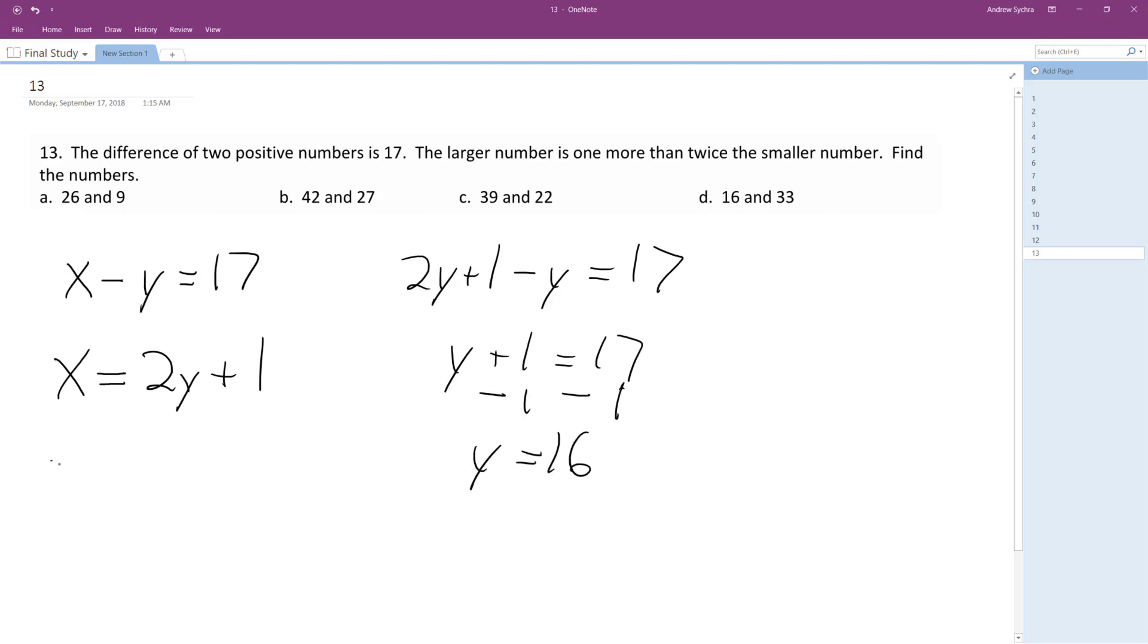So if Y equals 16, we will substitute Y equals 16 into the second equation. So X is equal to 2 times 16 plus 1. So X is equal to 32 plus 1, which is 33. So 33 and 16.